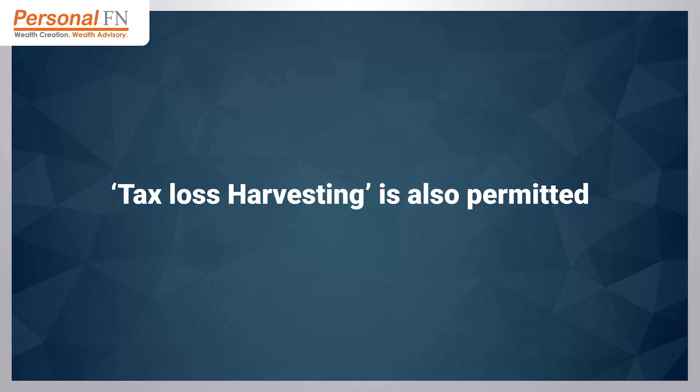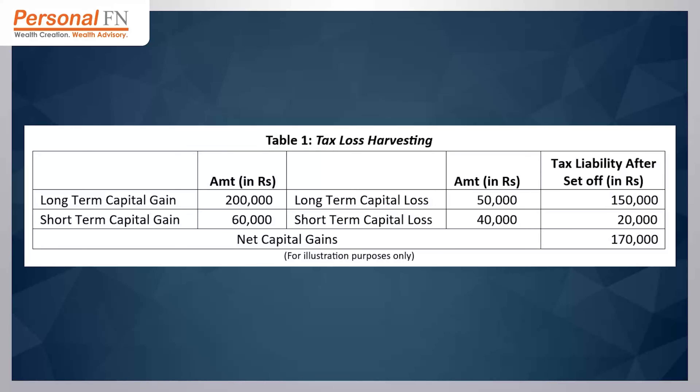Tax loss harvesting is also permitted. Notional losses on your mutual fund and listed equity stocks portfolio can be converted to realized losses. This strategy makes sense at a market high where, despite the run-up, certain mutual fund schemes or shares in your portfolio haven't fared well. By booking a capital loss, you reduce your tax outgo and pay tax only on the net capital gains. For example, say you have an LTCG of Rs. 2 lakh and STCG of Rs. 60,000, but are also witnessing a notional long-term capital loss of Rs. 50,000 and a short-term capital loss of Rs. 40,000. By booking these losses before the end of the financial year, your net capital gain reduces to Rs. 1.7 lakh instead of Rs. 2.6 lakh.